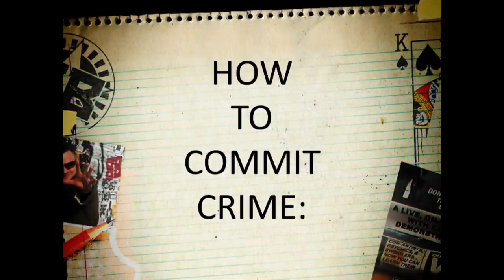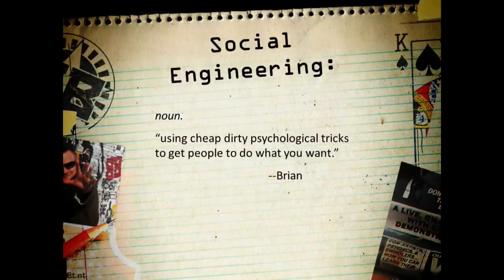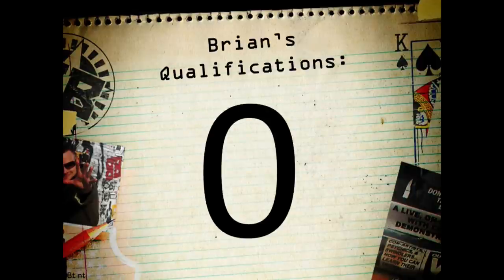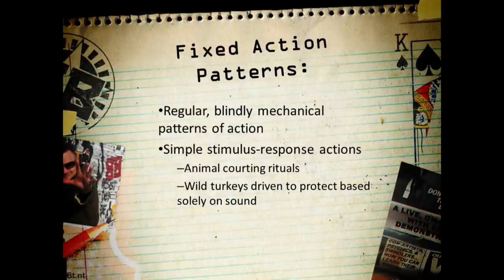The dictionary says social engineering is the practical application of sociological principles to particular social problems. I restate that simply as using cheap, dirty psychological tricks to get people to do what you want. Anytime I sound smart, it's because I'm standing on the shoulders of giants — brilliant scientists have written fantastic papers about this. If you want to see the background, it's all been written up in Robert Cialdini's book Influence. Let's get started with fixed action patterns.